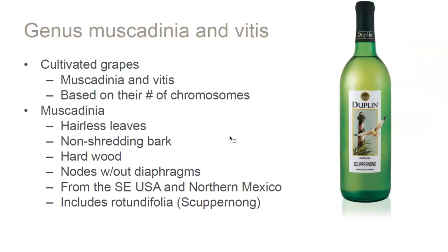Looking at the genera — there are two subgenera, Vitis and Muscadinia, differentiated by number of chromosomes. Muscadinia is very interesting: it has completely hairless leaves, whereas vinifera always has some kind of hair on it. Also, vinifera has shredding bark where Muscadinia has very smooth bark. And Muscadinia has really hard wood — they're quite different.